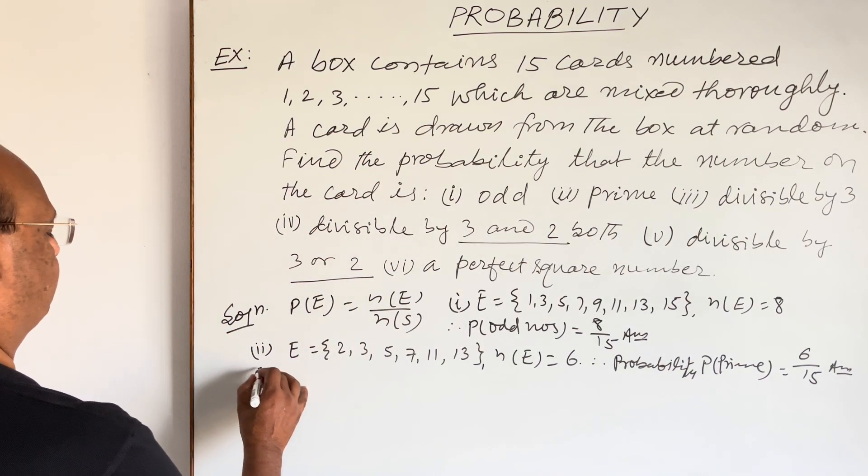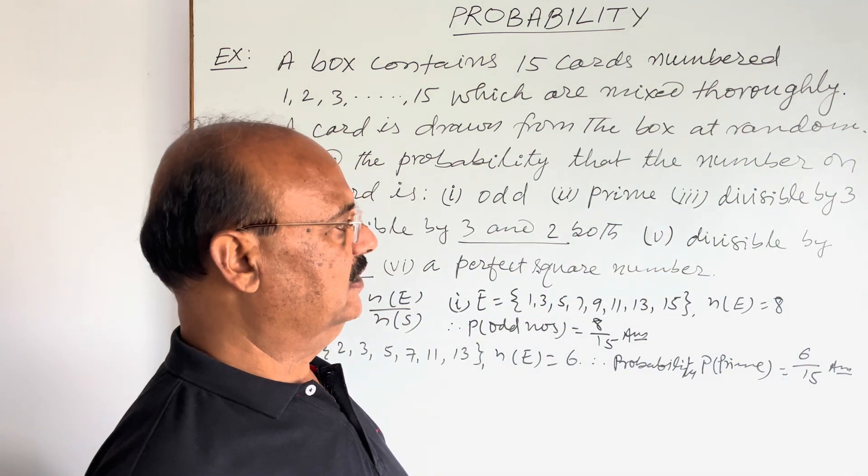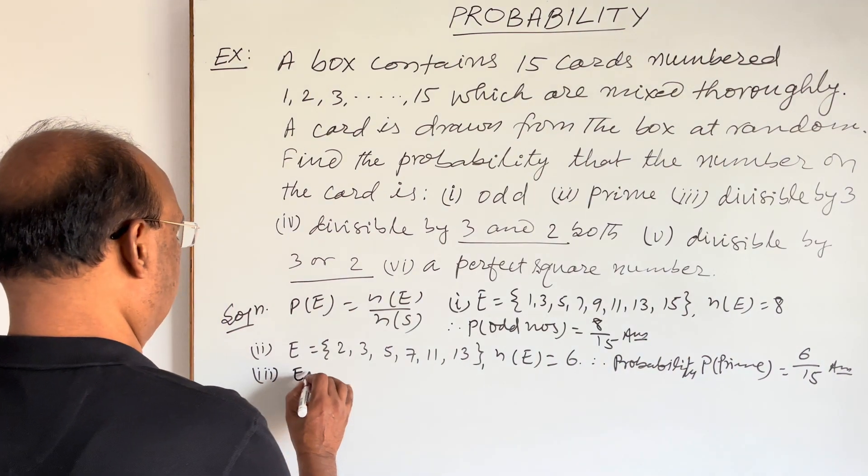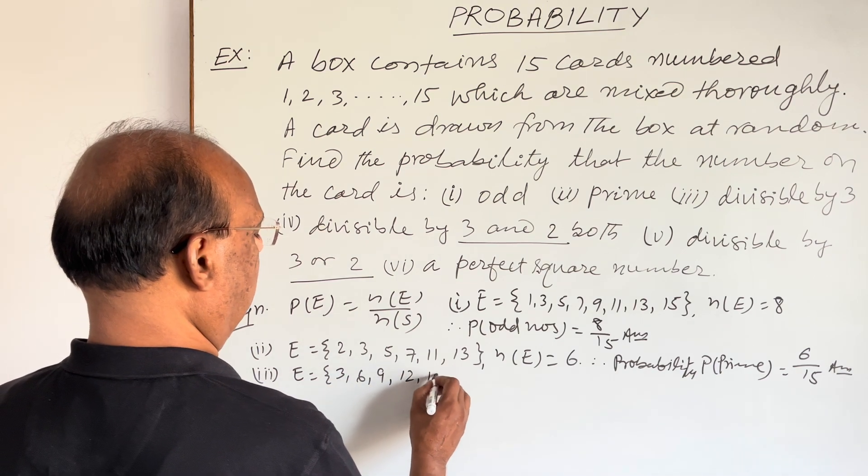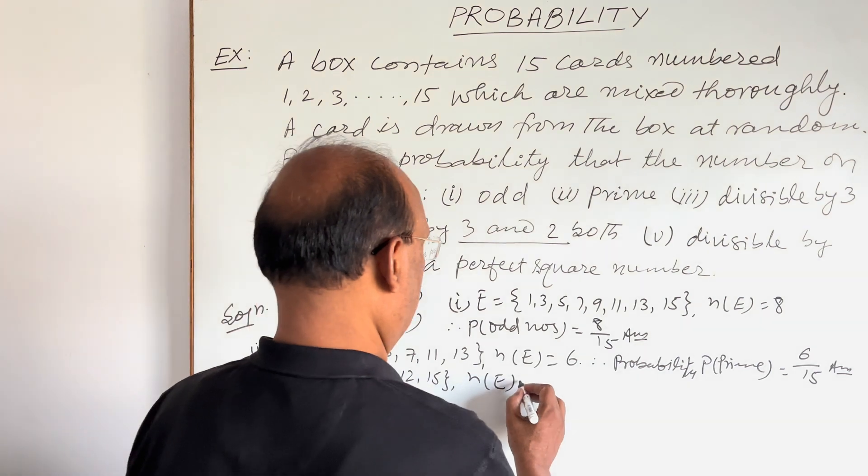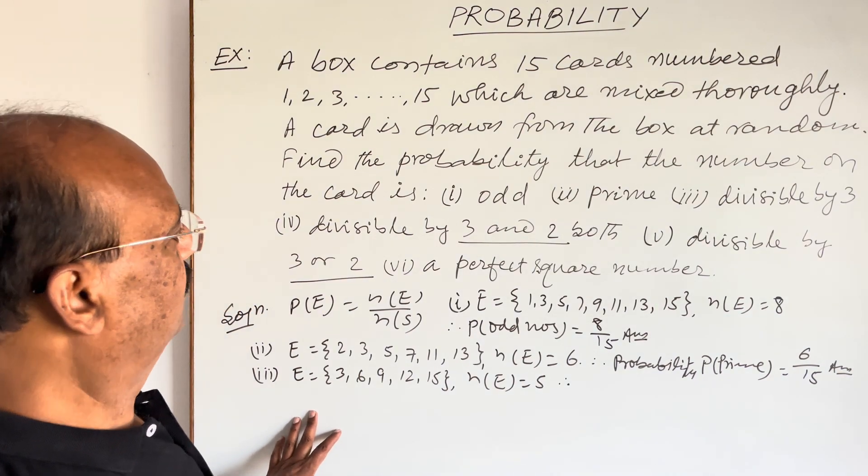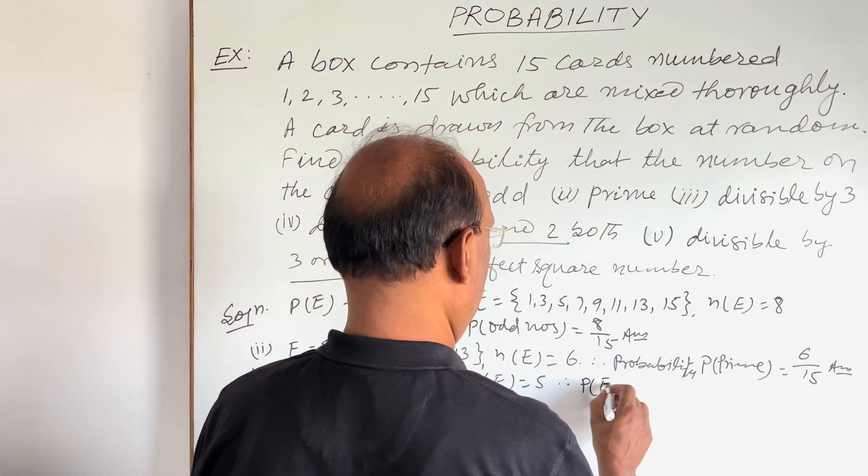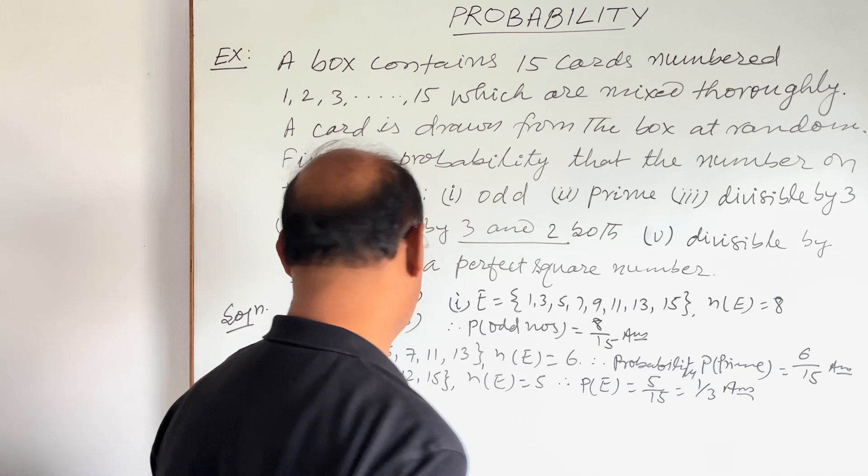Now let us see third part. All numbers divisible by 3. We have to find out the probability that the card withdrawn bears a number divisible by 3. So in this case, event will consist of which numbers? 3, 6, 9, 12 and 15. So in this case, n(E) how much? 1, 2, 3, 4, 5 is 5. Therefore, probability of this event, when numbers are divisible by 3, so in this case, probability of E will be 5 by 15. This is equal to 1 by 3. And this is the answer.